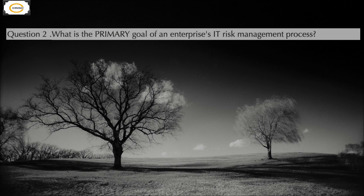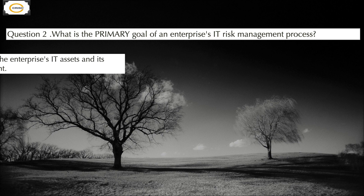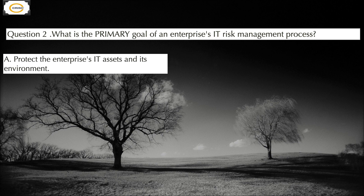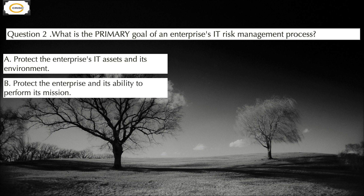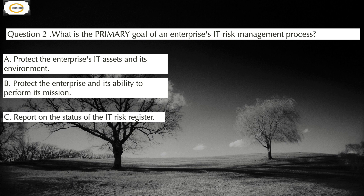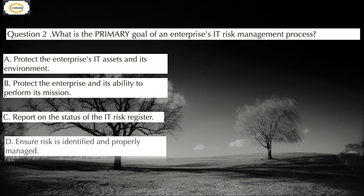Moving to the next question: what is the primary goal of an enterprise IT risk management process? Option A: protect the enterprise IT asset and its environment; Option B: protect the enterprise and its ability to perform its mission; Option C: report on the status of the IT risk register; Option D: ensure risk is identified and properly managed.